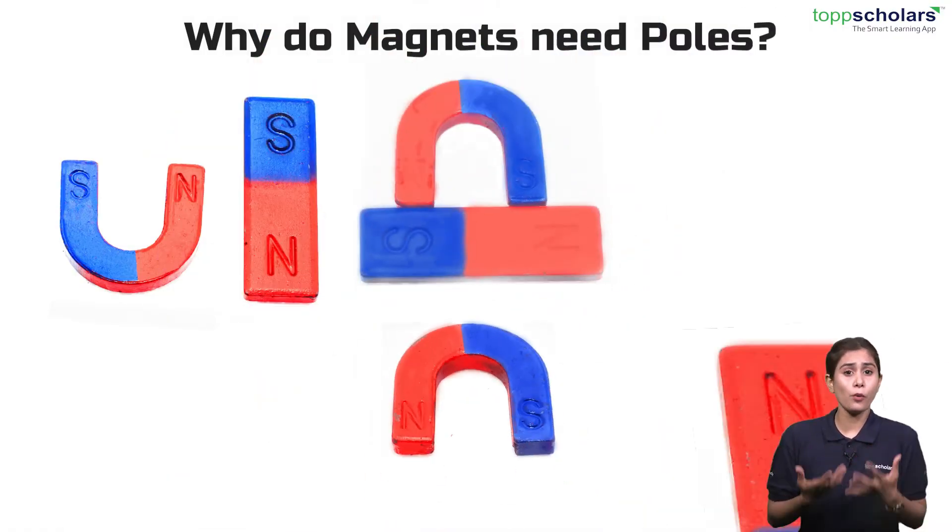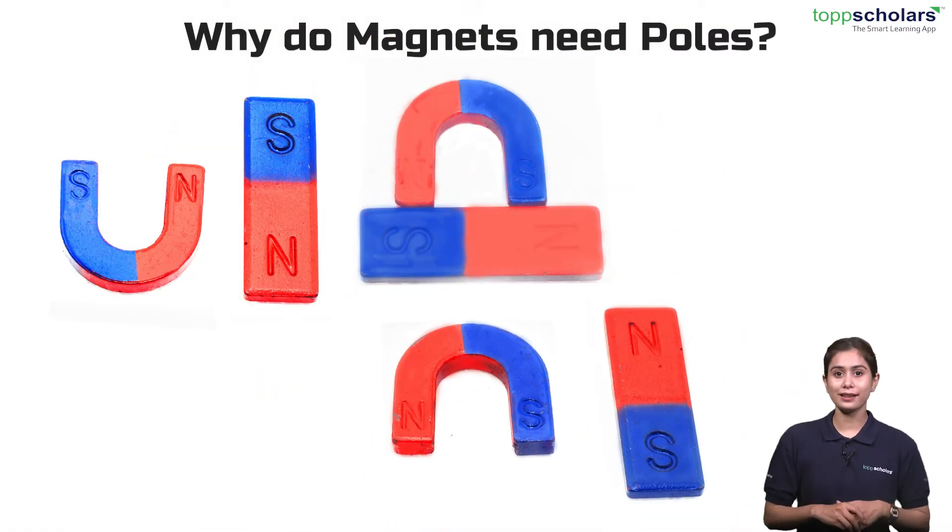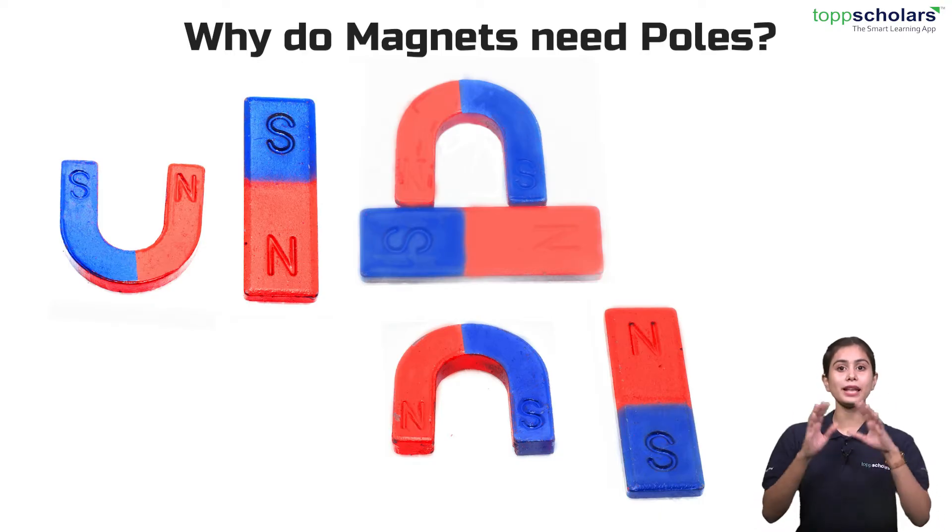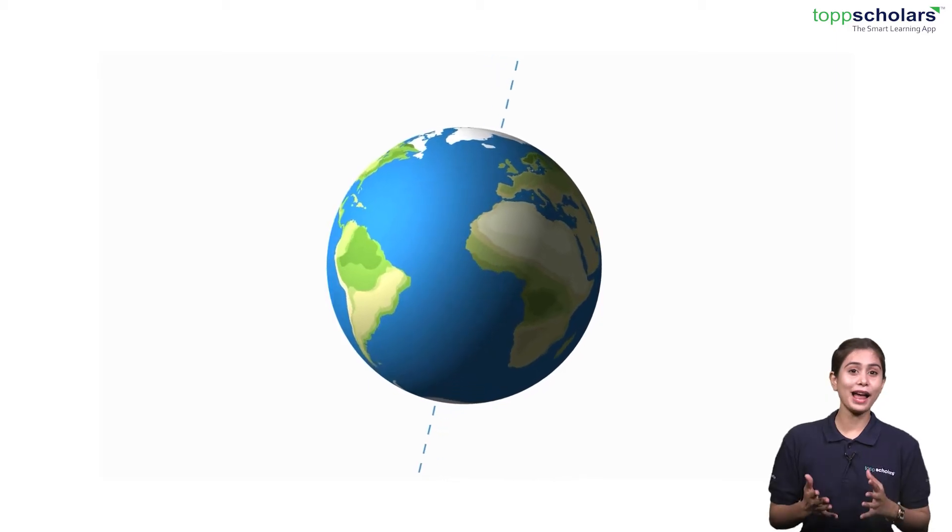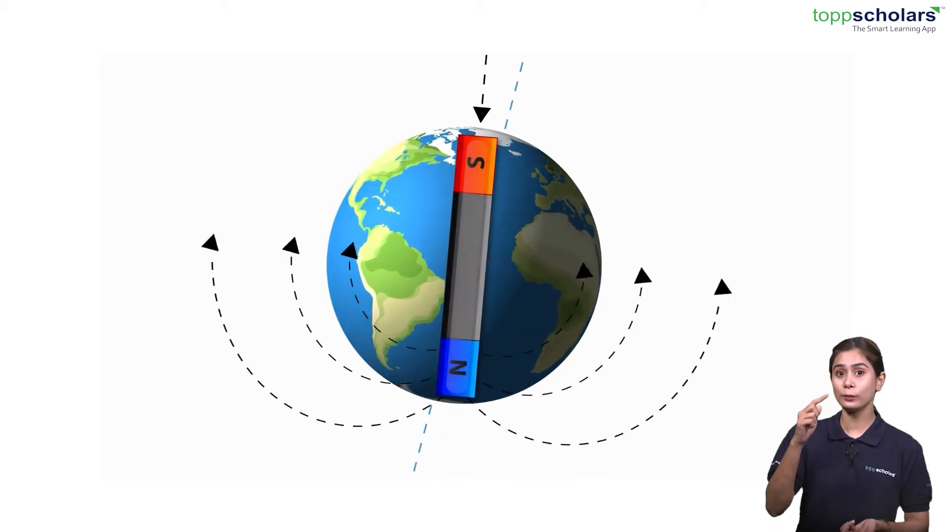But why do magnets need poles? To understand this, let's talk about the biggest magnet of all. Earth. Yes, our planet has its own north pole and south pole.